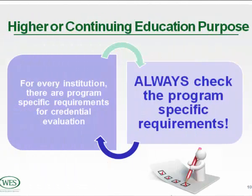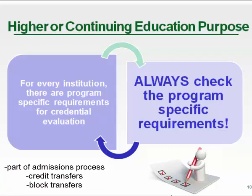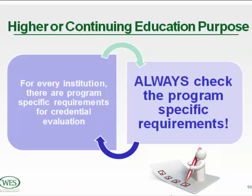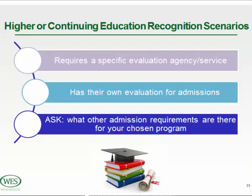For higher or continuing education, your first contact should be the institution — specifically the program you're interested in applying to — because every institution has different requirements. You would get your credentials evaluated for admissions, and you may also have an opportunity to get credit transfers or block transfers. Some programs specify that you use an evaluation agency; others require you to send your documents directly from your home country to the new school, which will do their own evaluation.